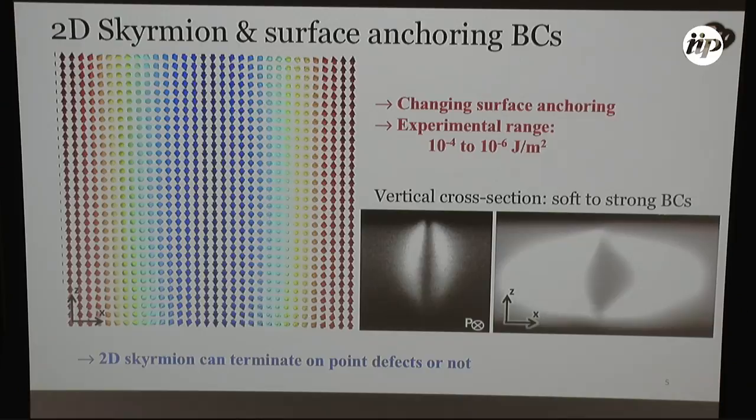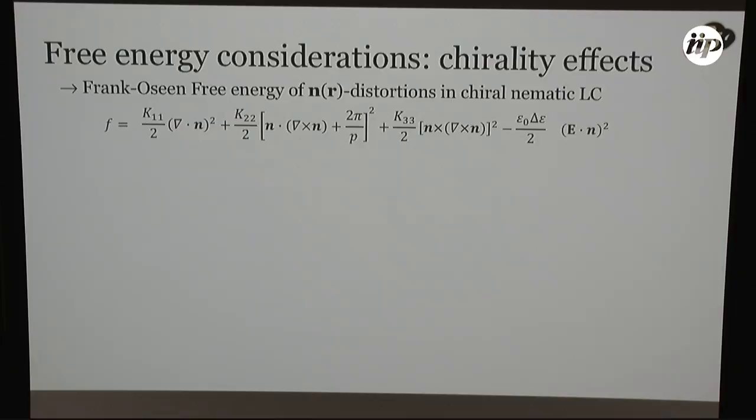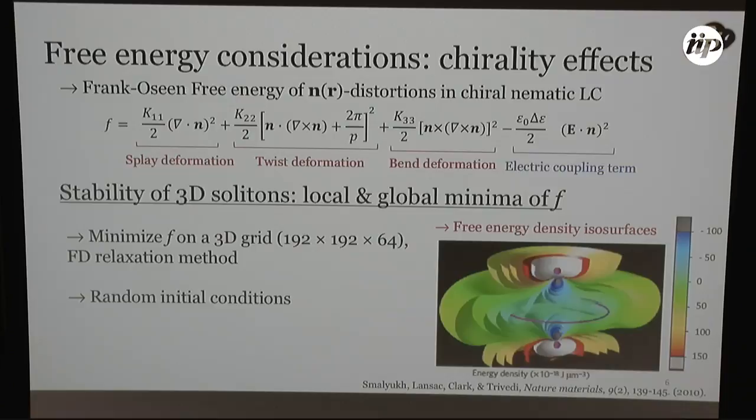Now, to generate these nice numerical images, we utilize an energy minimization technique based on the Frank-Oseen free energy, which we have already seen this morning. So a quick review, we have terms here that account for the splay, twist, and bend deformations as well as the cost from the electric coupling term. Yes, we also account for the boundary conditions here. I don't go into it very much, but I could show you after the talk.